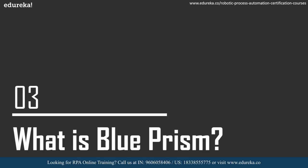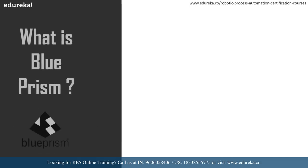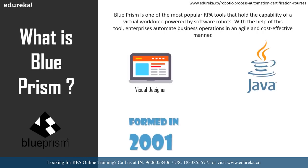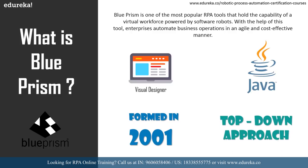Blue Prism is one of the most popular RPA tools that holds the capability of a virtual workforce powered by software robots, formed in 2001. This tool differs from others by using a top-down approach, and with it enterprises automate business operations in an agile and cost-effective manner. Blue Prism is based on the Java programming language and offers a visual designer with drag-and-drop functionalities.